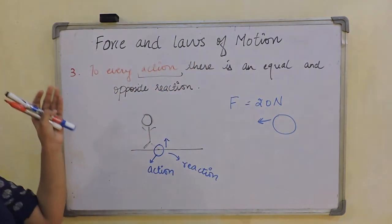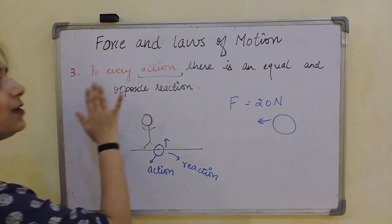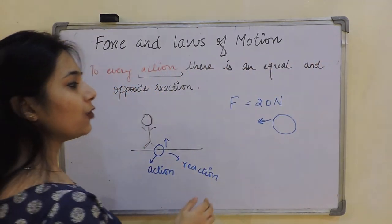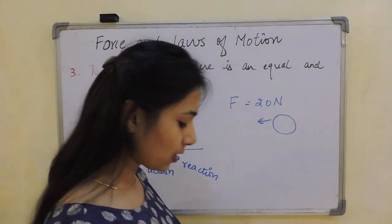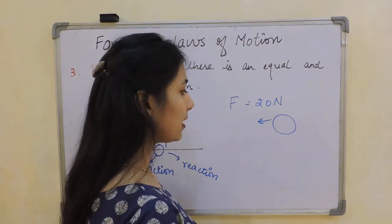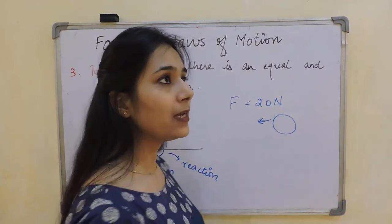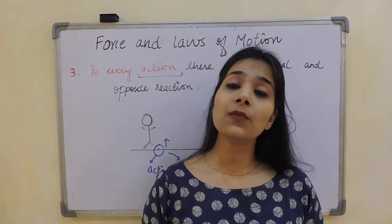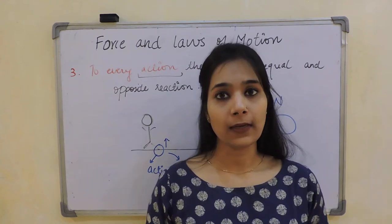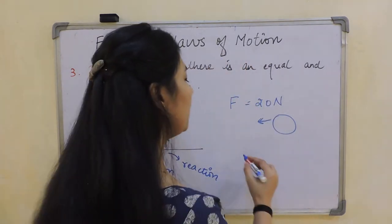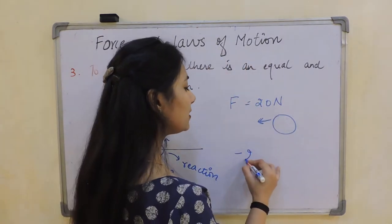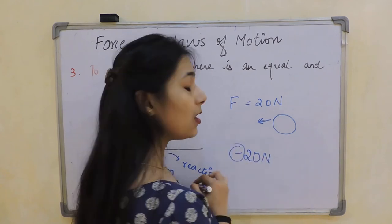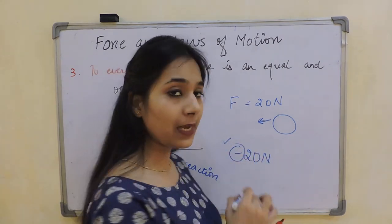So according to Newton's third law, to every action there is an equal and opposite reaction. For example, if in a question you are given that there is a ball and 20 Newton force is being applied on it, then the reaction force on the body will be minus 20 Newton, since it is equal and opposite — opposite in sign.